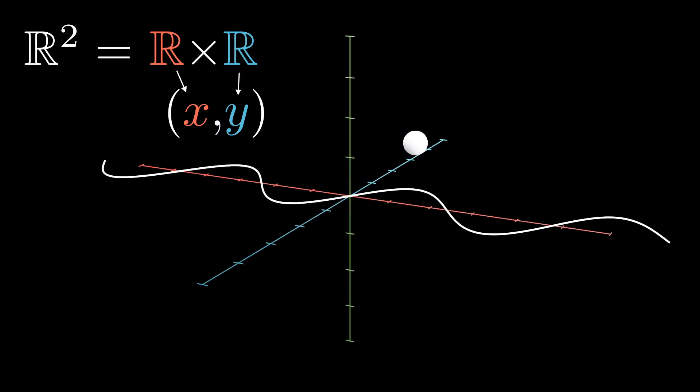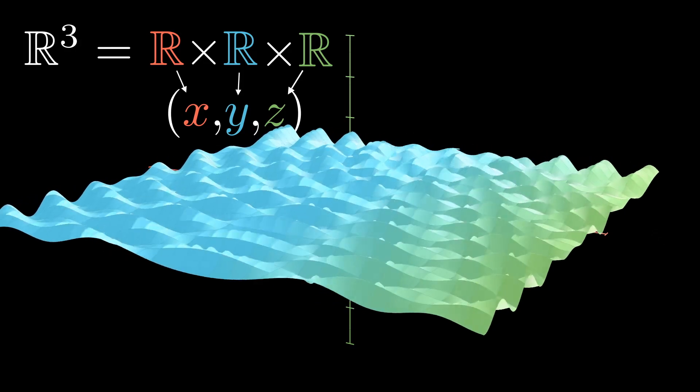If we cross R2 with R again, then we obtain R3. Call that three space. Its elements are ordered triples with coordinates x, y, and z. And in calculus, we spend most of our time here studying curves and surfaces.